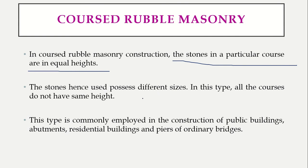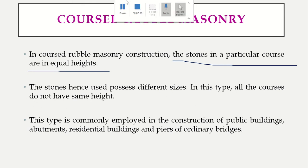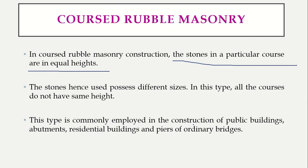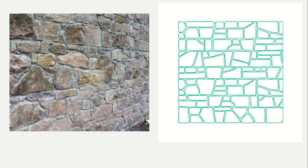The widths of stones may differ — we are not concerned with the width, only that every course has stones of equal height. However, the height of different courses may not be equal; it is the height of stones within the same course that will be the same. Coursed rubble masonry is mostly employed in construction of public buildings, abutments for bridges, piers for bridges, and residential buildings.